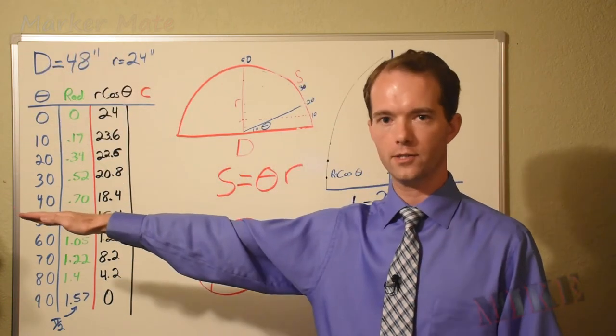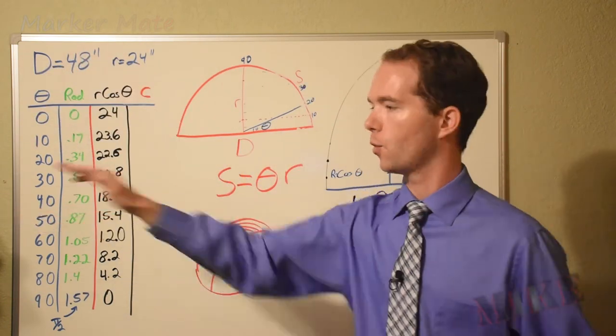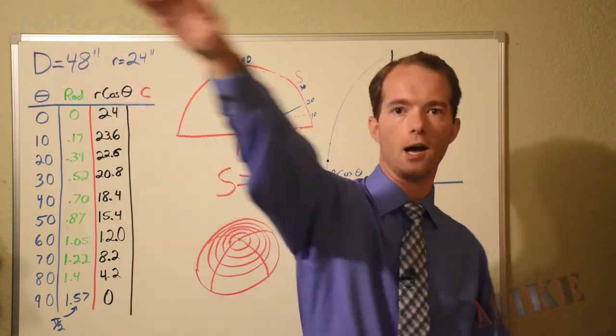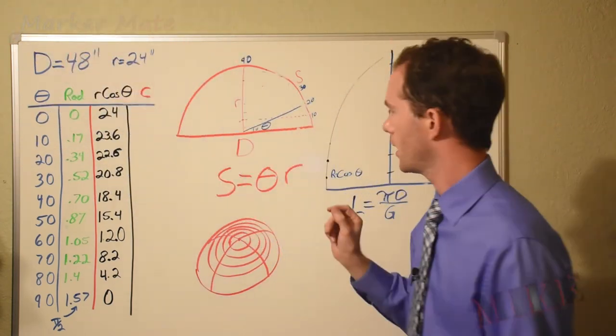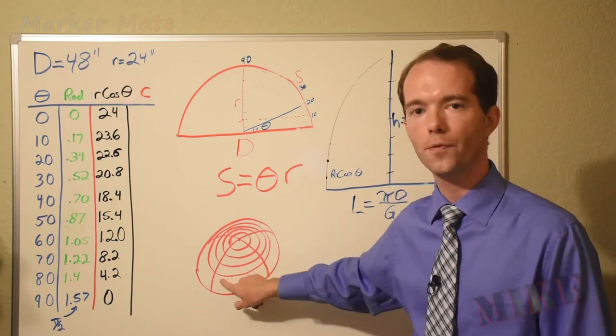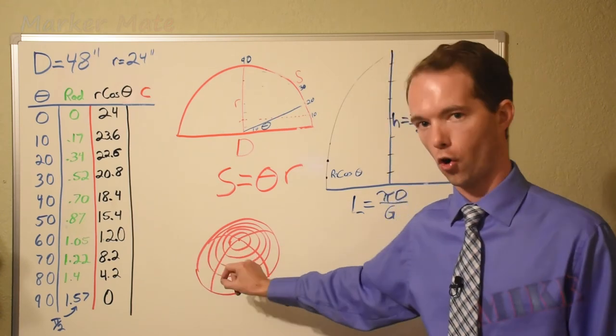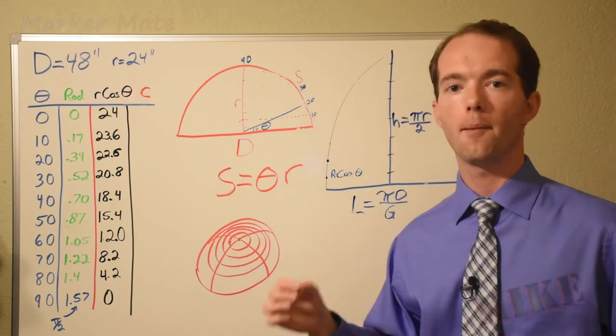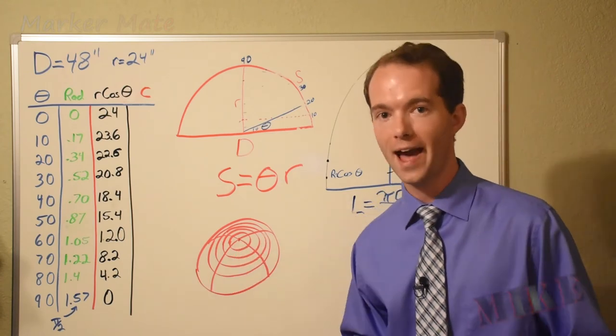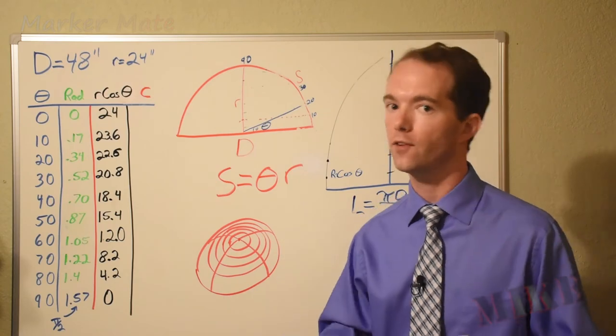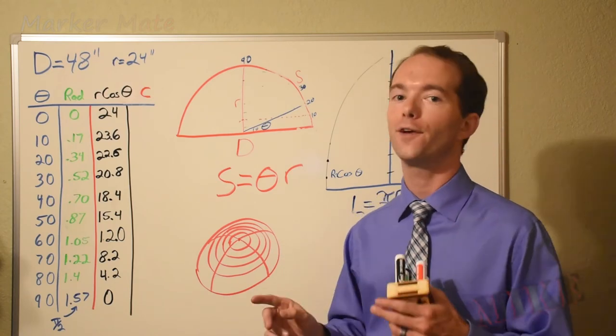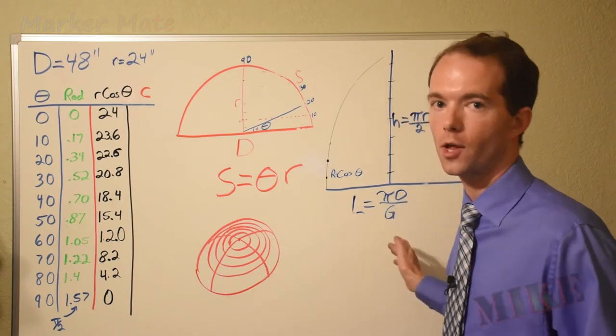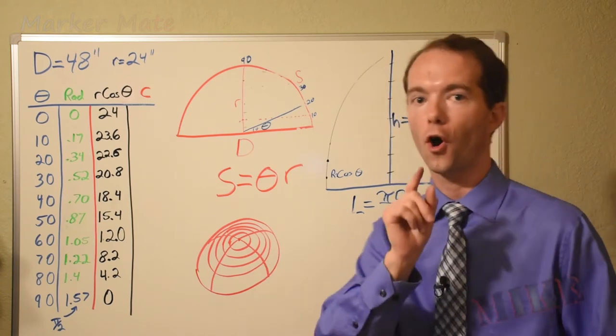Down here at zero, we're going and it's 24. We tilt up 10 degrees, we go and it's a little bit less. We keep tilting up and sweeping out these circles. And what we've got to do is figure out what the circumference of these circles are so that we can then divide those circumferences by the number of gores that we have so that then we can divide those by two and figure out then where our spline points are from the center line of our gore. We're almost there, I promise.